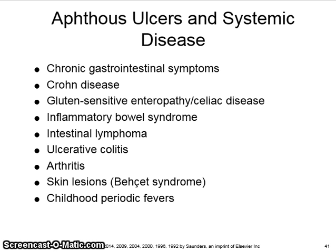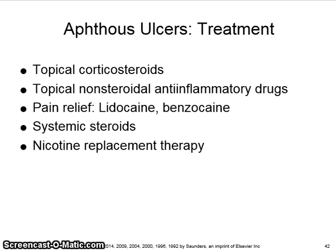Apthous ulcers are associated with the following systemic diseases: chronic gastrointestinal conditions, Crohn's disease, gluten sensitivity, inflammatory bowel syndrome, intestinal lymphoma, ulcerative colitis, arthritis, Behçet syndrome, and childhood periodic fevers. The treatment for apthous ulcers generally involves topical corticosteroids, topical nonsteroidal anti-inflammatory drugs, and for pain relief, lidocaine and benzocaine rinses. Systemic steroids may be needed for the treatment of major apthous ulcers. Nicotine replacement therapy has been suggested to be helpful when apthous ulcers occur in association with tobacco cessation.